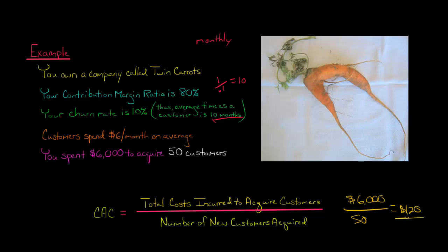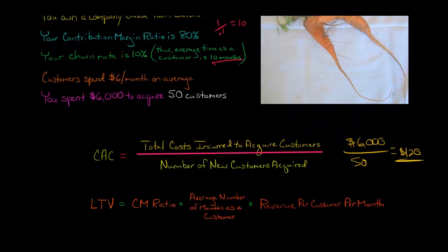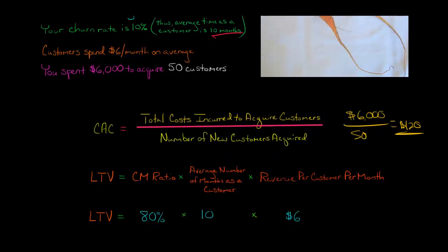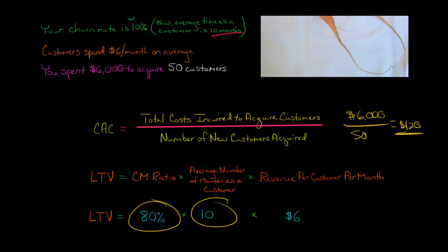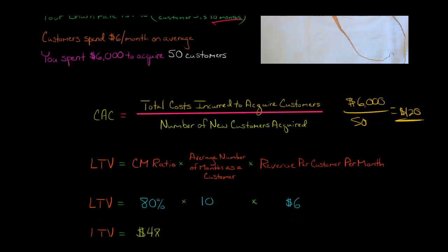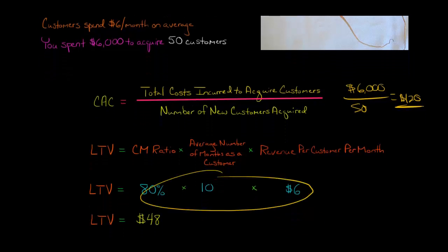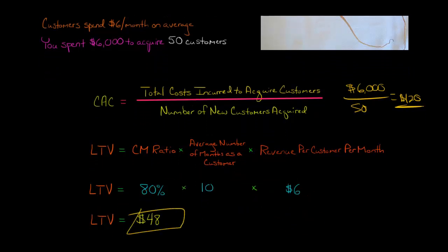So if it costs $120 to acquire a customer, we'd better get a value of more than $120 — hopefully three, four, or five times $120 for this to be worth it. Our lifetime value of a customer is calculated as: contribution margin ratio (80%) times average customer life (10 months) times revenue per customer per month ($6). Multiplying all this out gives a lifetime value of $48.